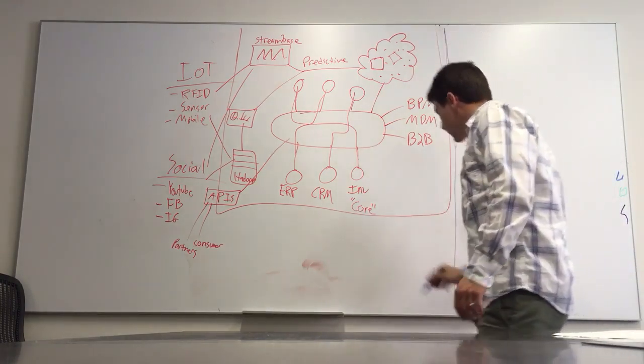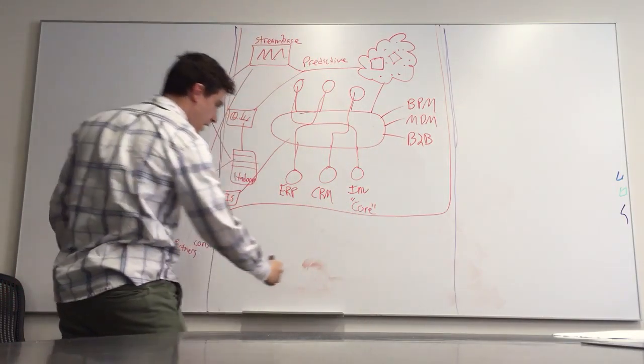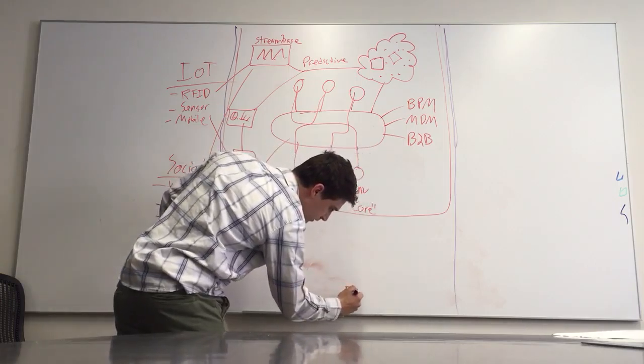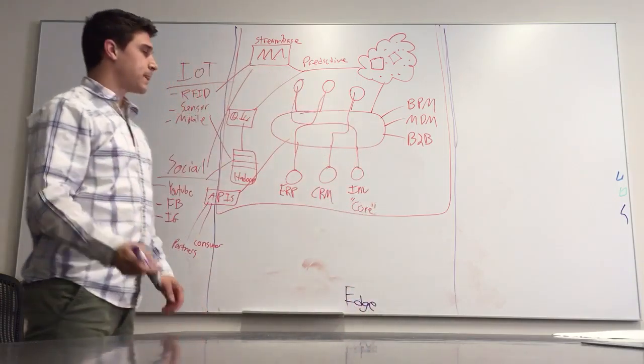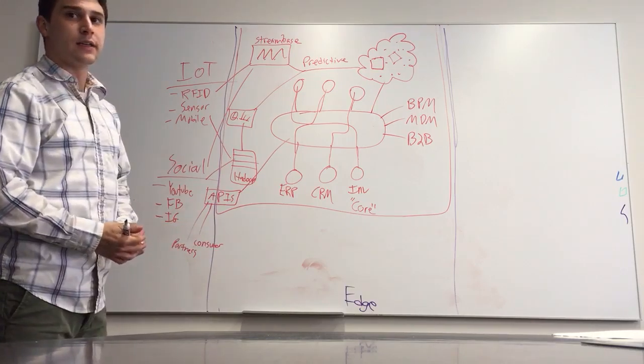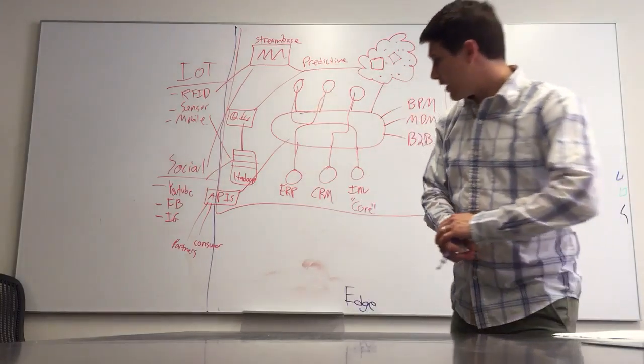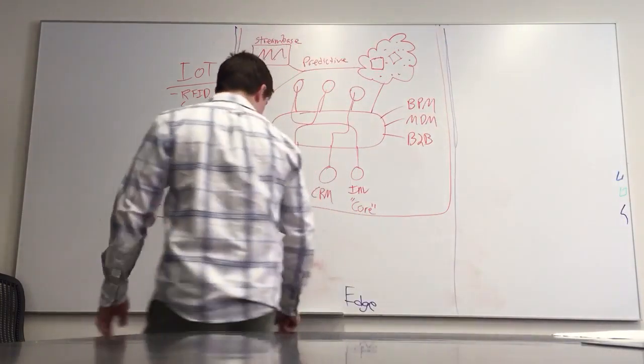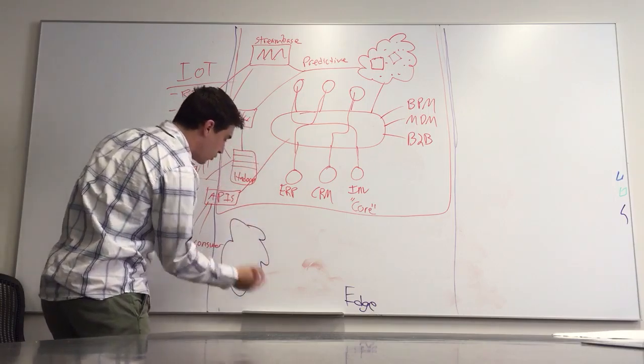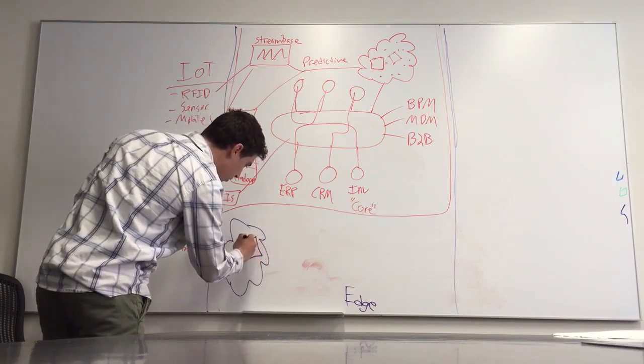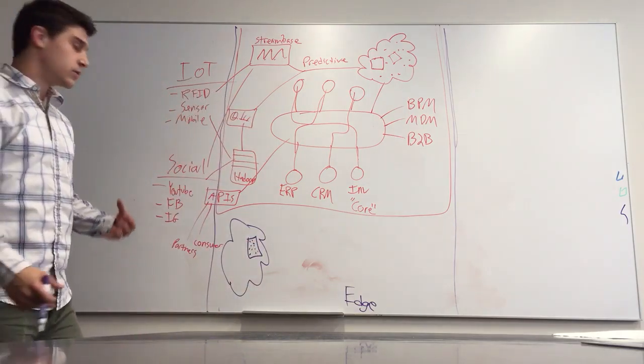We have the edge down here. What's the edge referred to by analysts as? Mode Two. Down here in the edge, you have all your cloud-first companies. You have your Ubers, you have your Facebooks, those type of companies who operate in the cloud.